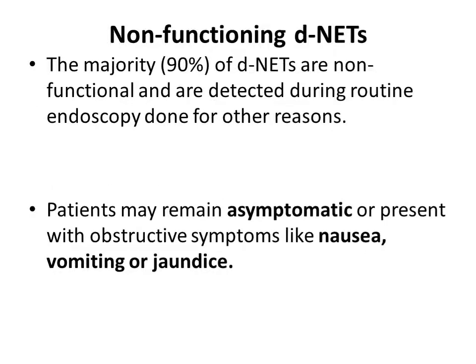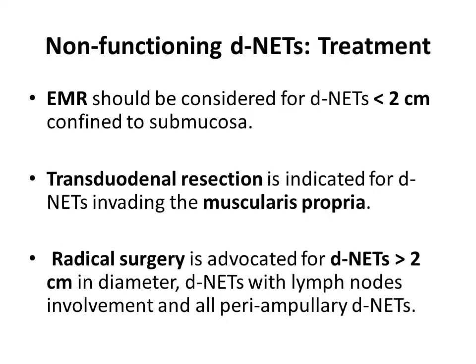Next is non-functioning DNET. The majority of DNETs are non-functional and are detected during routine endoscopy done for other reasons. Patients may remain asymptomatic or present with obstructive symptoms like nausea, vomiting, or jaundice. For treatment, EMR should be considered for DNETs less than 2 cm in size and confined to the submucosa. Transduodenal resection is considered if the NET invades the muscularis propria, and radical surgery is indicated for tumors more than 2 cm, DNETs with lymph node involvement, and all periampullary DNETs.